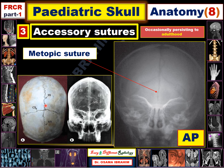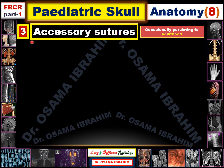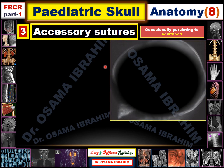Additional images confirm the metopic suture. In one view, the sagittal suture separates the parietal bones and the coronal suture separates the frontal from the parietal bone, with a persisting metopic suture also visible. Another image for a different patient confirms persistence of the metopic suture. In the anteroposterior view, the sagittal suture and lambdoid sutures are seen, with coronal sutures at the upper part of the film.